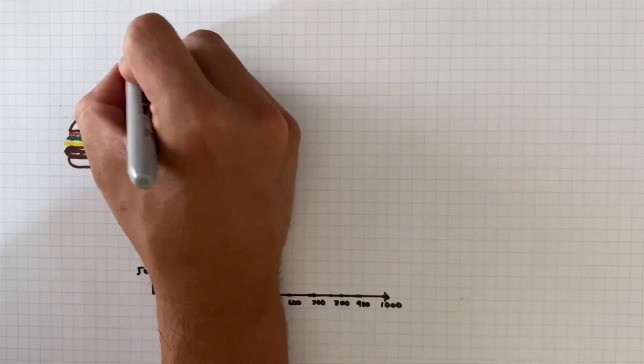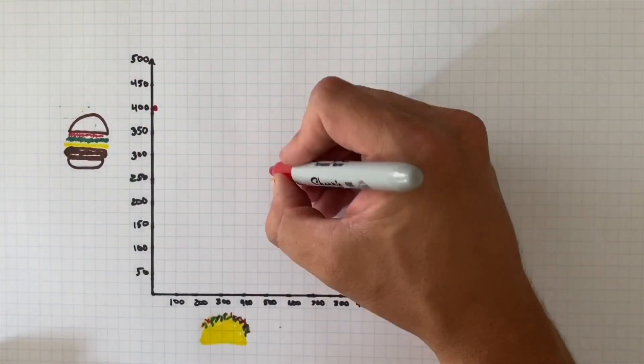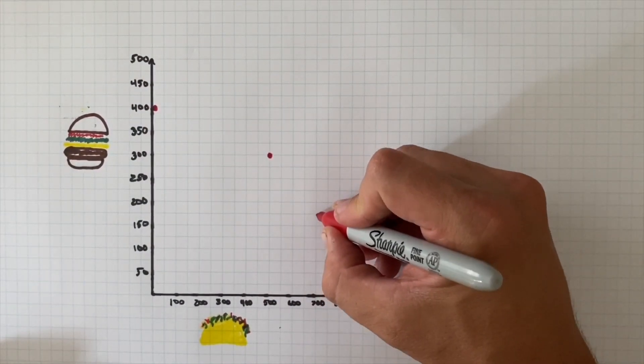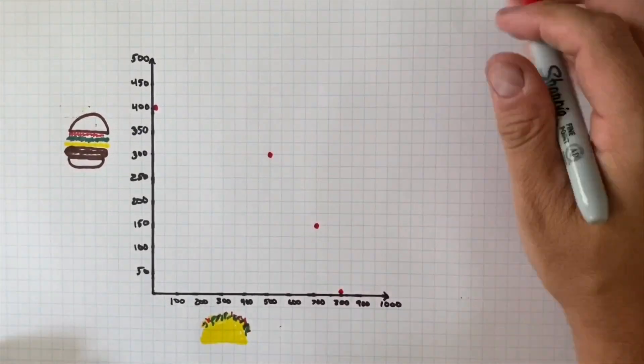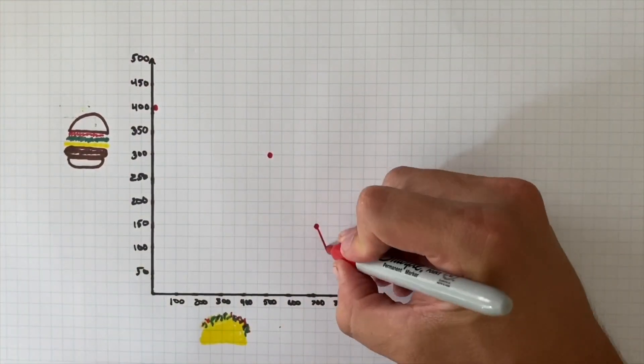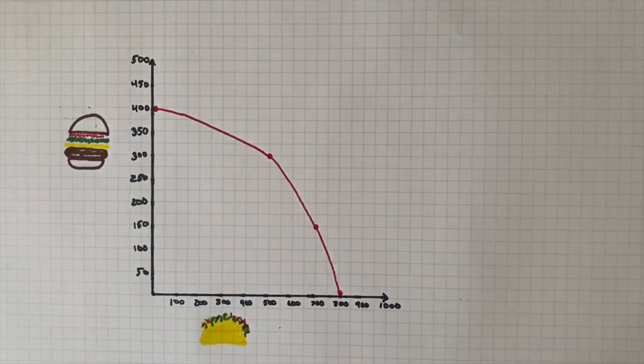Then we'll go ahead and add a line or a curve that's going to represent the maximum output at any given allocation based on the resources we have available. Obviously this is made up here too. This is going to do a few things for us. It's going to give us that visual representation of scarcity because we can't produce beyond the available resources. Also opportunity costs, because we can't produce more of one thing without first giving up some of the other. So if we want more tacos we're going to have to give up a certain amount of hamburgers in order to make that happen.